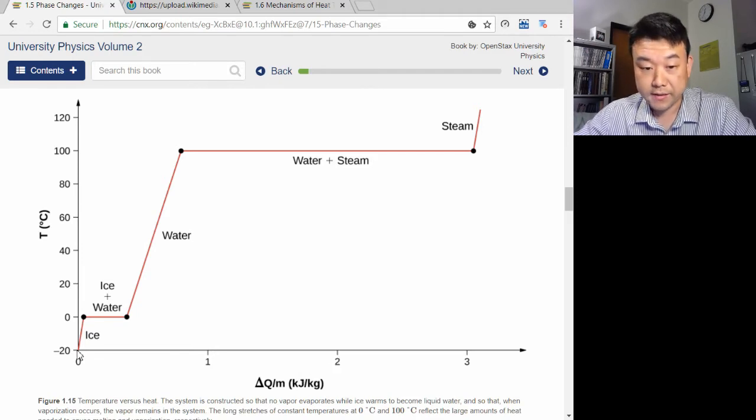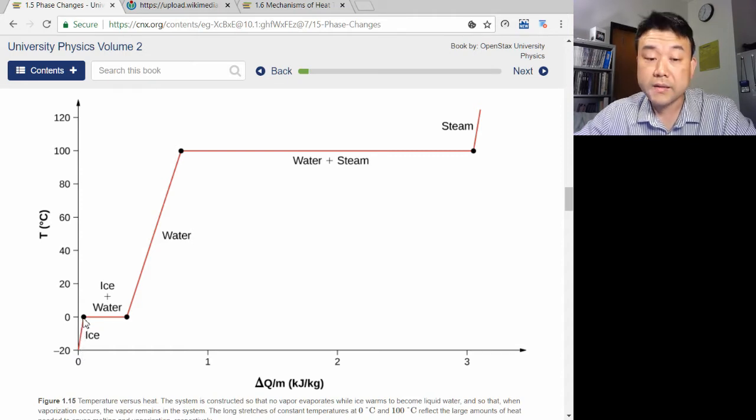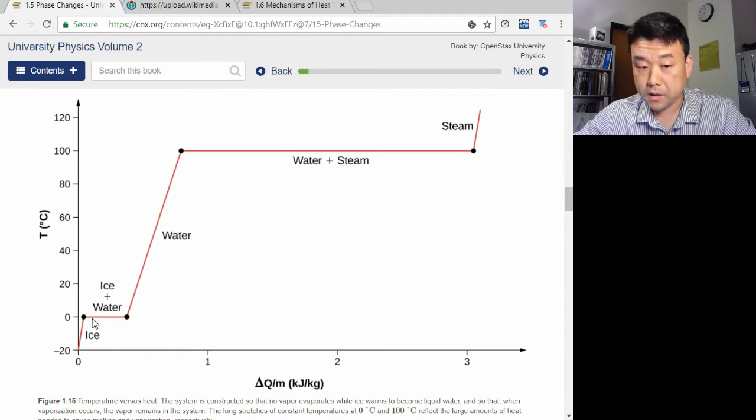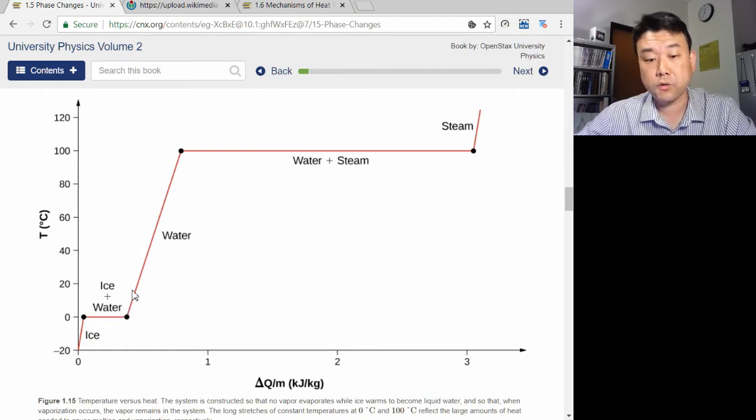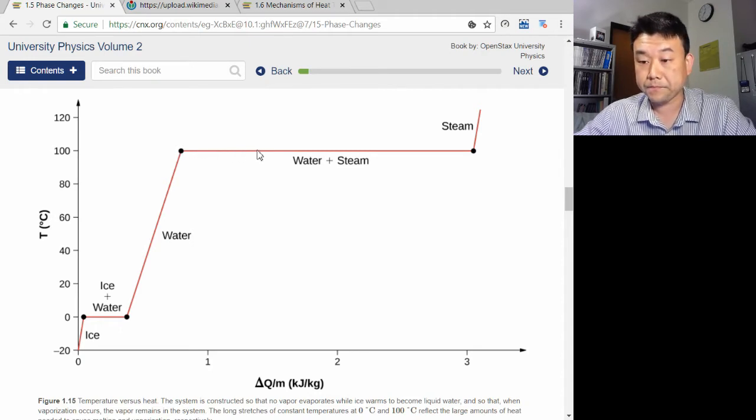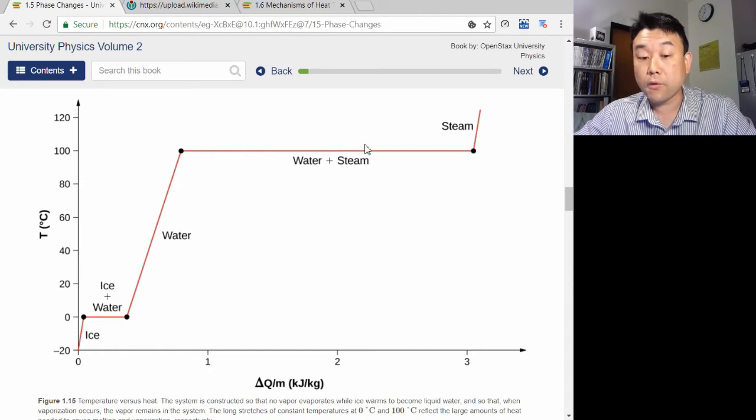As you initially add heat, the temperature of the ice increases. And this flat part is where ice is melting into water. The temperature begins to rise again after all the ice has melted, and then flattens out where water is being vaporized, that is, boiling into steam.